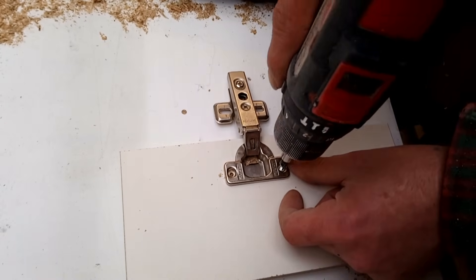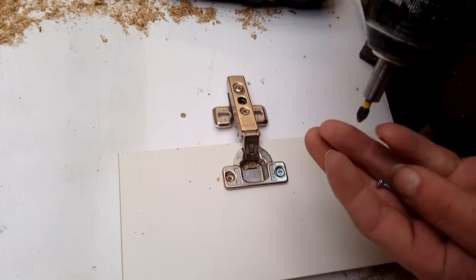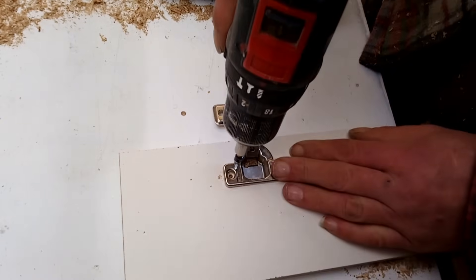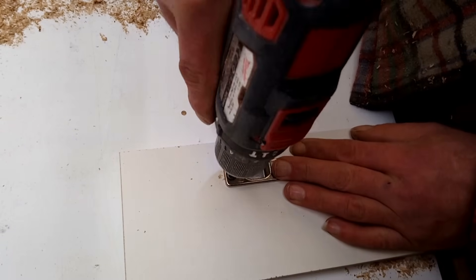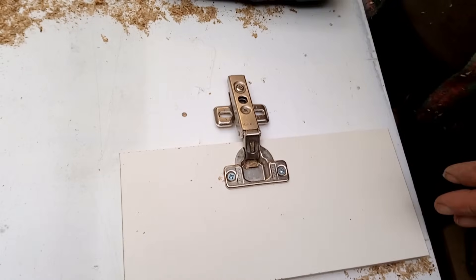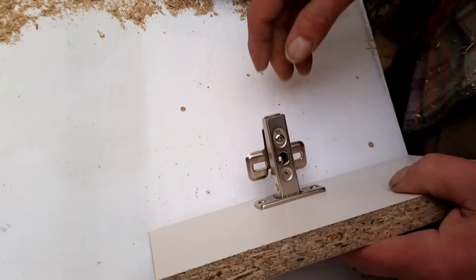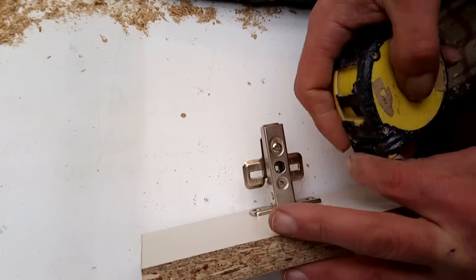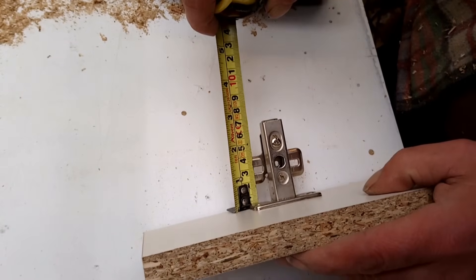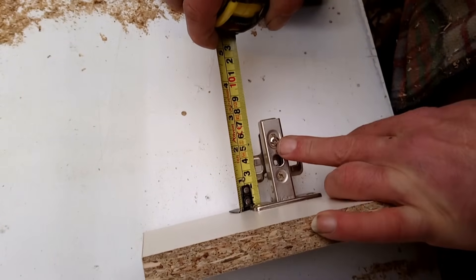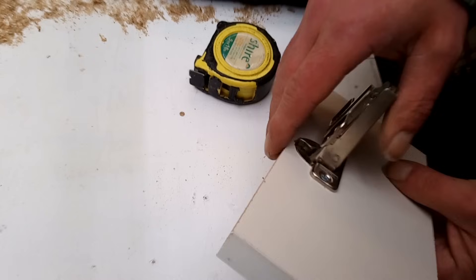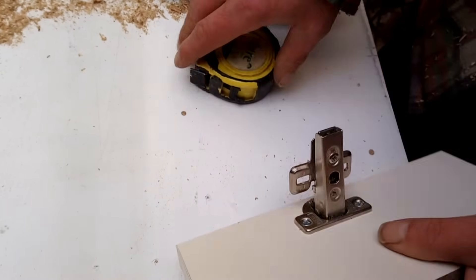A couple of screws, don't over tighten them. You need to set that distance which is probably 35 mil again, 30 mil on these you see. Like I said, they don't sit square so you just need to pull them straight a little bit.